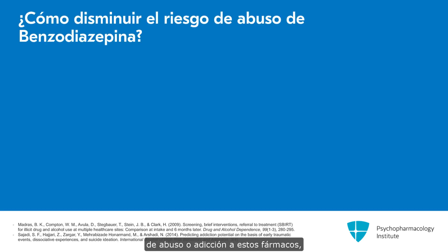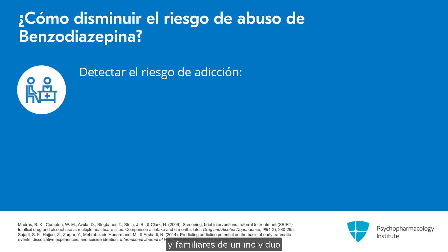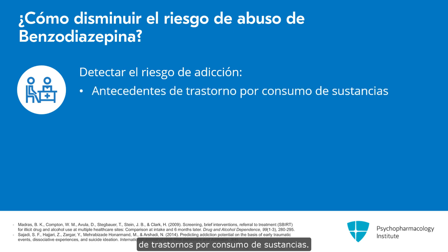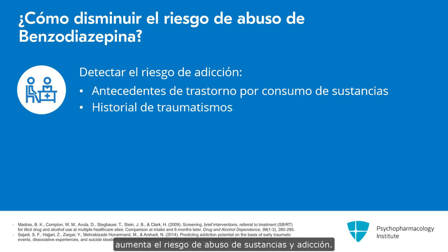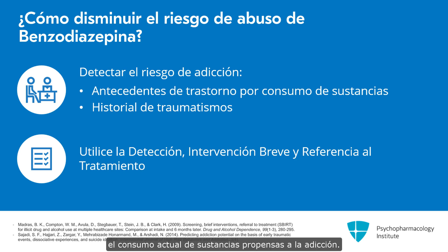When thinking about how to decrease the risk of misuse or addiction to these medications, you can screen for addiction-prone substances. You can do this in your history-taking by asking about an individual's personal and family history of substance use disorders. We also know that a personal history of trauma increases the risk for substance misuse and addiction. You can utilize the screening portion of Screening, Brief Intervention, and Referral to Treatment to help identify and address current addiction-prone substance use.